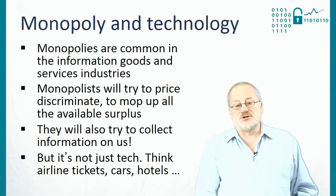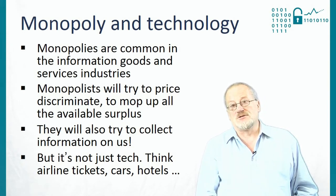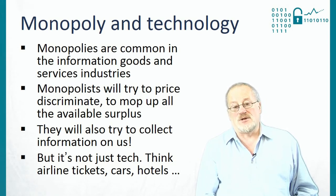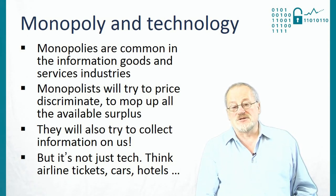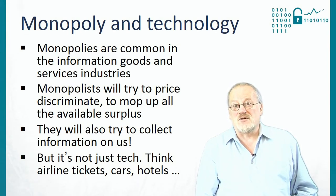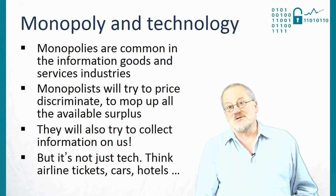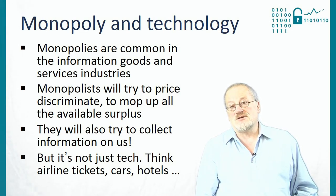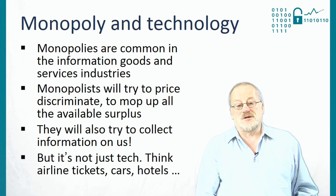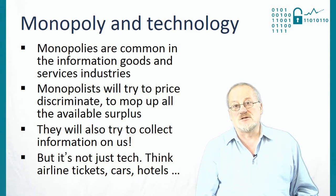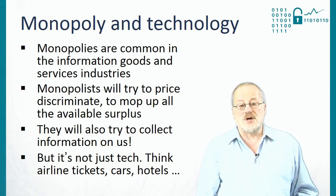And this is how monopoly and technology come together. Monopolies are common in the information goods and services industries because of network effects, because of lock-in, and because of low marginal costs. But then monopolists will try to price discriminate to mop up all the available surplus, and they'll also try to collect information on us. The existence of information services pervasively throughout our lives means that the monopolist is in a position to do exactly that. Software industry-type techniques related to monopoly are becoming ever more pervasive, not just in the software industry, but in other concentrated industries such as airline tickets, cars, hotels, and potentially spreading to just about everything else where there isn't some good reason for the market to remain price competitive.